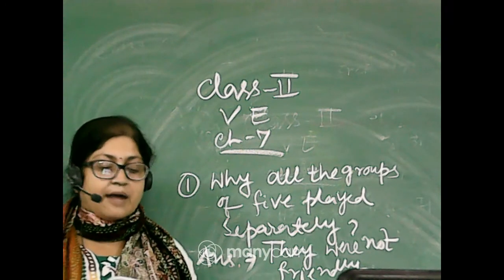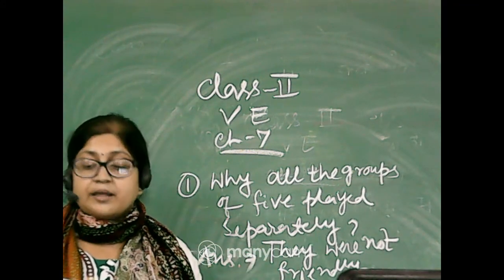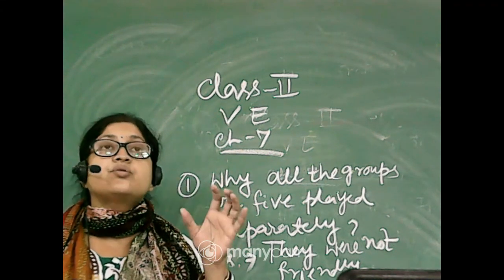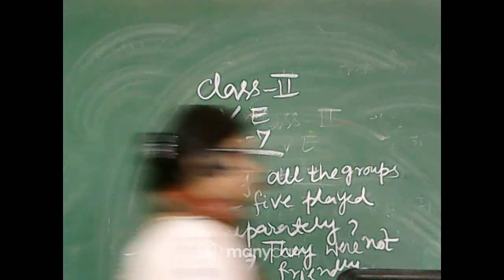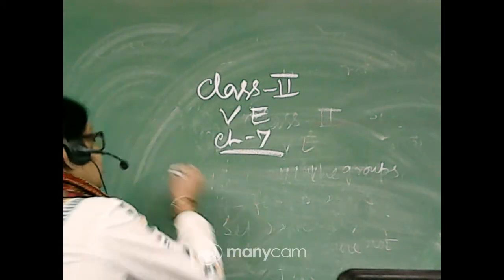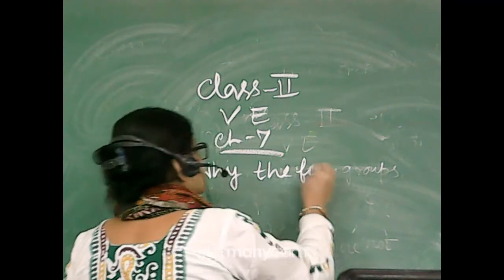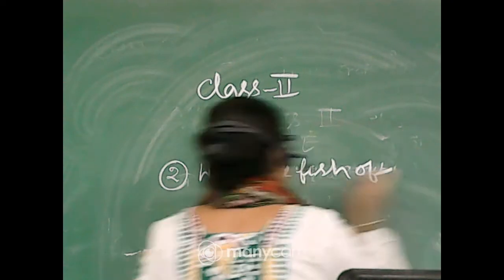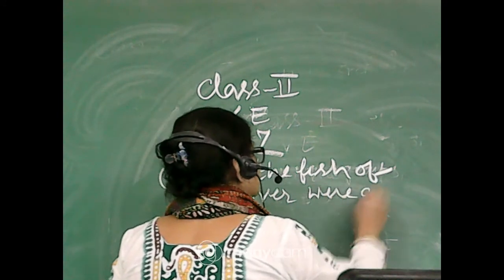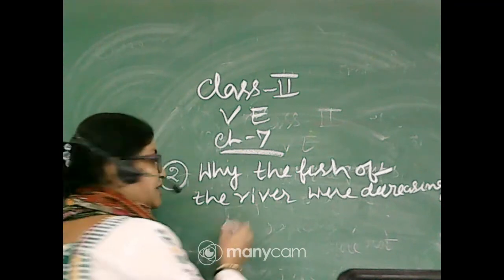Next question I can write like this. What is happening? Why are our number decreasing every day? Asked a fish one day. So why the fish of the each group are decreasing every day? That is another question. Question number two: why the fish of the river were decreasing every day?